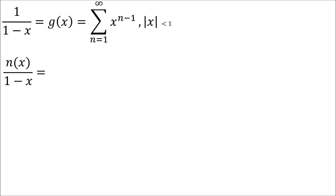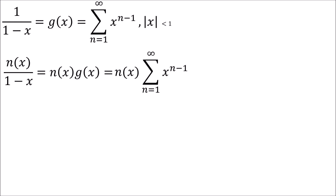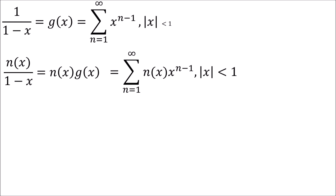So x divided by 1 minus x is the same as our original power series, except multiplying every single term by x. I've multiplied g of x by x, which multiplied every term by x. For a general function, n of x divided by 1 minus x equals n of x times g of x, where n of x means the numerator function. That means n of x divided by 1 minus x equals the sum from n equals 1 to infinity of n of x times x to the n minus 1, as long as the absolute value of x is less than 1.